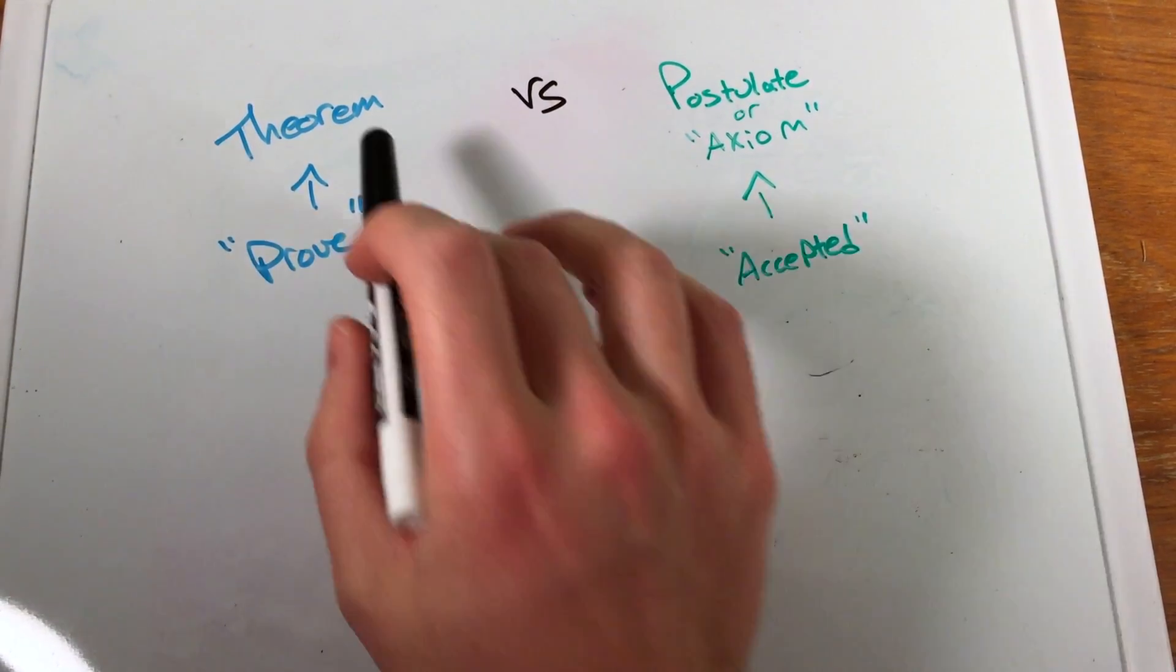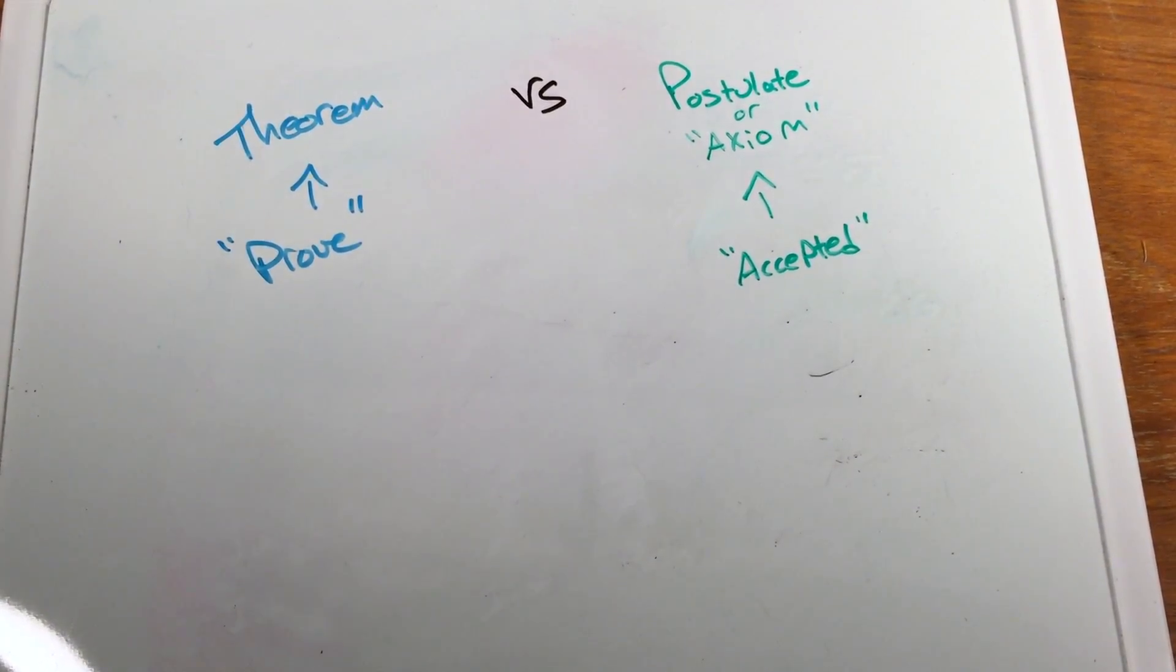In this video we're going to assess the difference between a theorem and a postulate. So what is the difference between a theorem and a postulate? Well, a theorem is something that we can prove to be true, a statement that can be proven to be true, and usually it's in an if-then form.